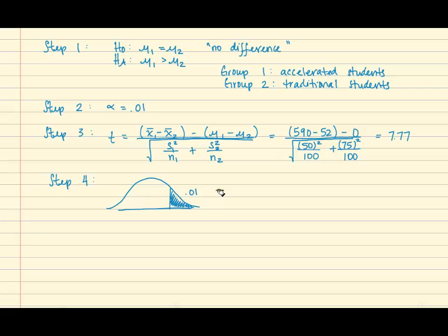Since we are using the t distribution we also have degrees of freedom. And our degrees of freedom for this test is the smaller of n1 minus 1 or n2 minus 1. Since both of the sample sizes were the same we can determine that our degrees of freedom are 99. And so looking at the t table and locating 99 degrees of freedom, we determine that our critical value is 2.33.